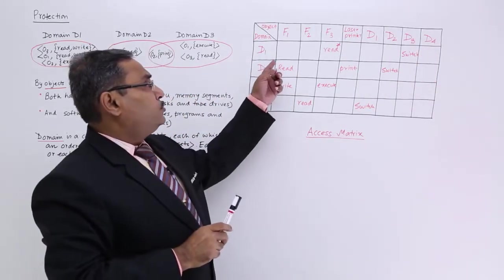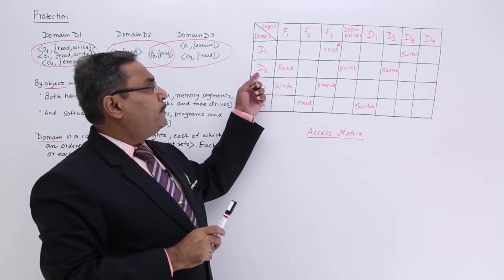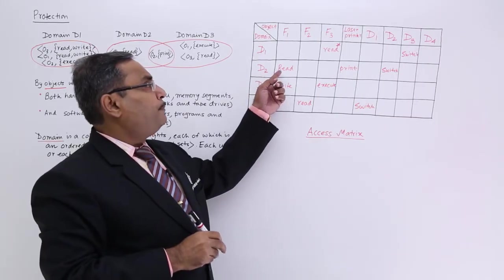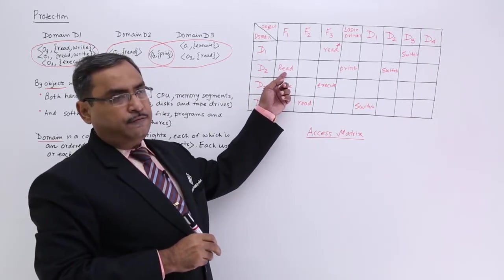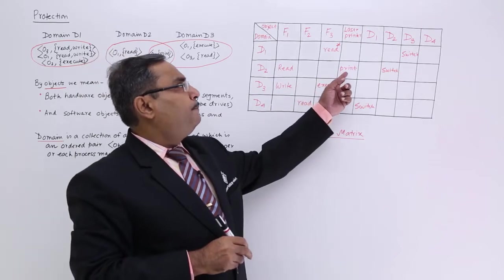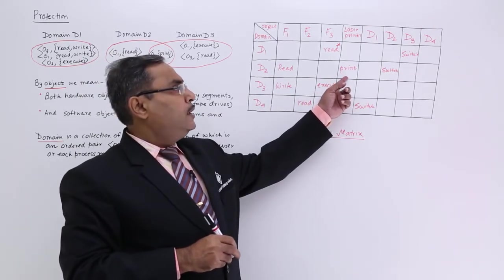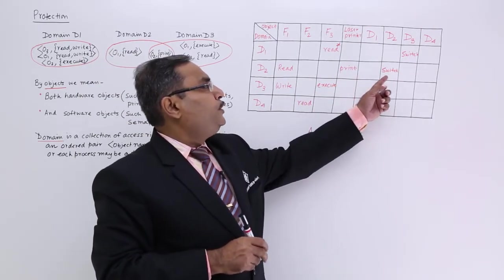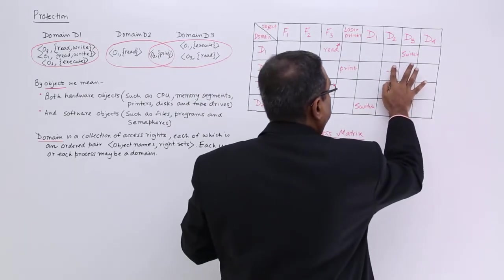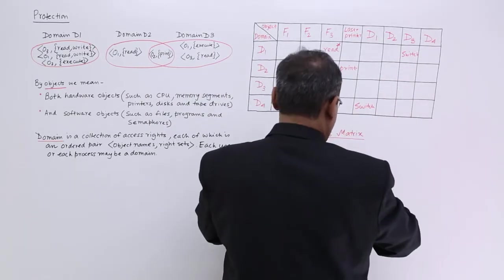Now, so if you find yourself in this particular domain D2, then you can perform read on the object F1, you can perform print on the laser printer or also from D2 say I am writing this switch here, I think that will be better, I am writing switch here.